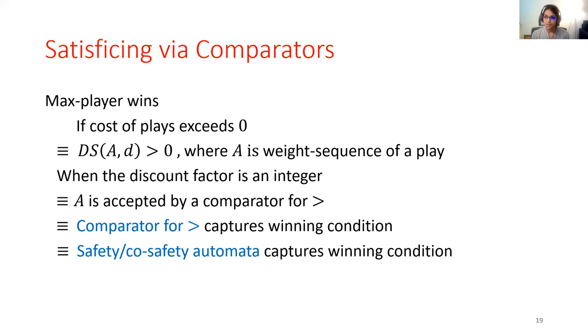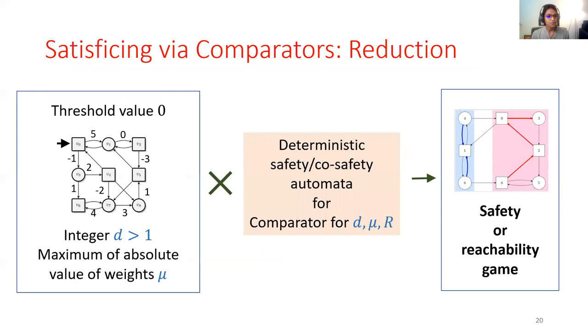We can leverage existing algorithms for solving games with omega regular objectives to solve satisficing now, which is to take the input quantitative game, take a product with the comparator automata, and the resulting game would be either a safety or a reachability game. It's safety or reachability because of the nature of the comparator automata.